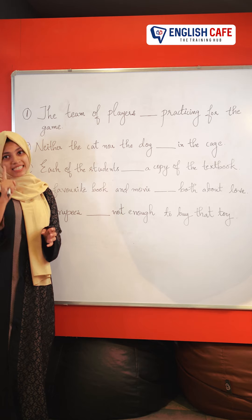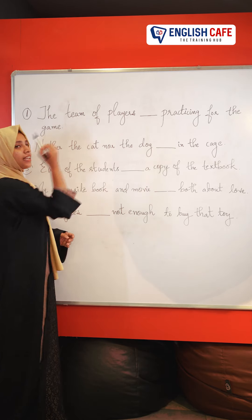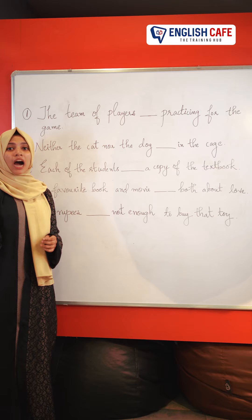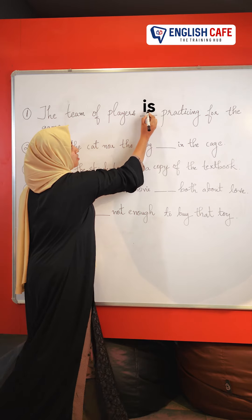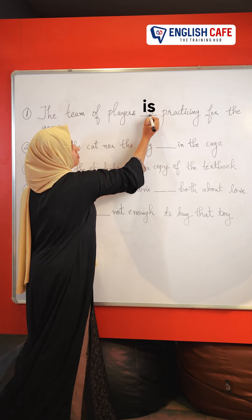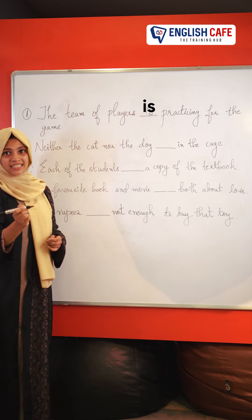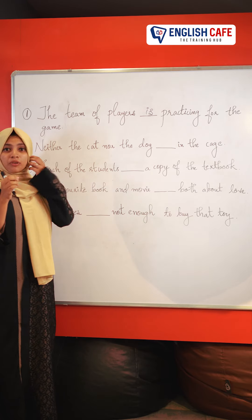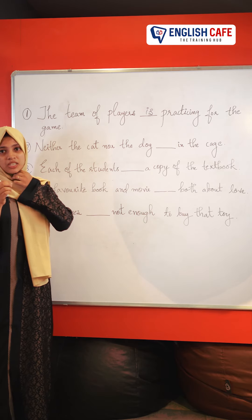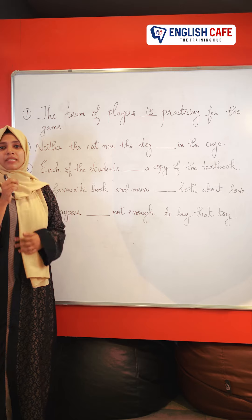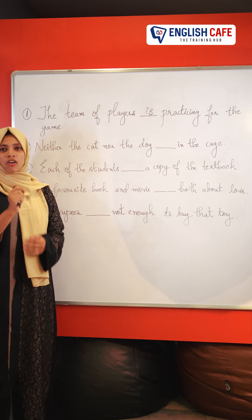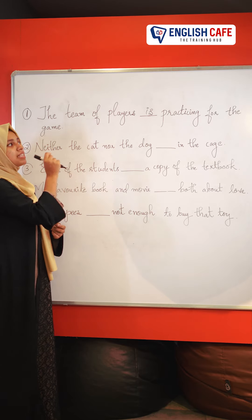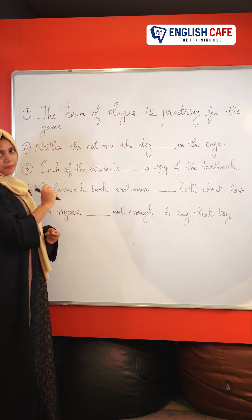The team is singular. So, what auxiliary verb do we use here — 'is' or 'are'? The team of players is a singular subject. When we use a singular subject, we use a singular auxiliary verb. So, the team of players is practicing for the game.